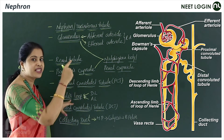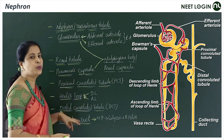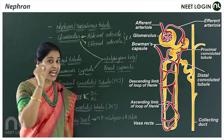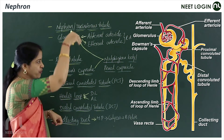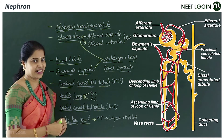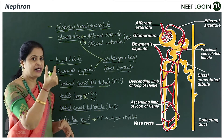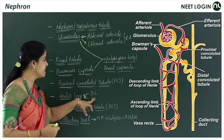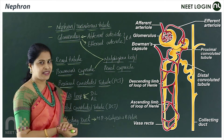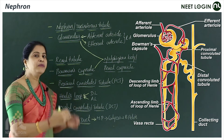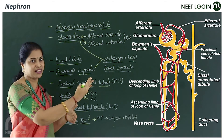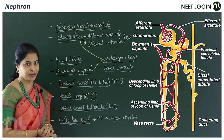The proximal convoluted tubule leads into a hairpin-turn loop called Henle's loop, which is a characteristic feature of mammalian nephrons. Henle's loop has two limbs: the descending limb and the ascending limb. The descending limb and the thin segment of the ascending limb are lined with simple squamous epithelium, while the thick segment of the ascending limb is lined with simple cuboidal epithelium.